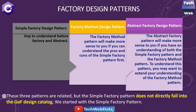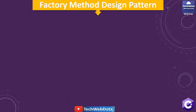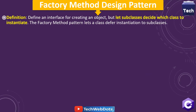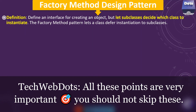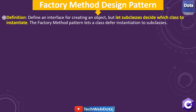These three patterns are related, but the simple factory pattern does not rightly fall into the Gang of Four design catalog. We started with simple factory, and in today's session we will discuss factory method design pattern. The definition says: an interface for creating an object, but let subclasses decide which class to instantiate. Factory method pattern lets a class defer instantiation to subclasses.